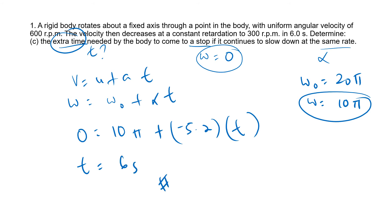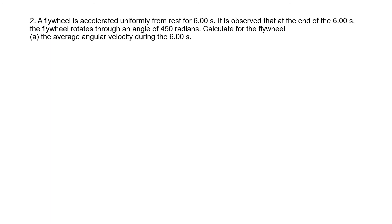Question two: a flywheel accelerates uniformly — meaning alpha has a non-zero value — and starts from rest, so omega naught equals zero. In 6 seconds it is observed that the flywheel has rotated through an angle of 450 radians. That angle is the angular displacement theta. Calculate the flywheel's average angular velocity during those 6 seconds.